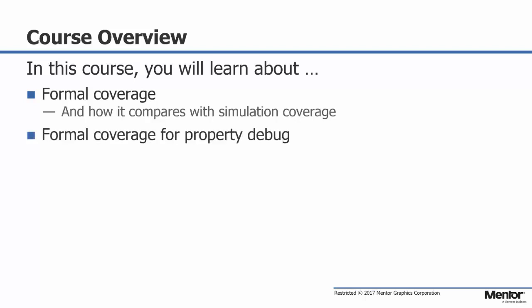Next we'll look at how formal coverage information can help you debug vacuous and uncoverable properties. These buggy properties are technically proofs and typically have little in the way of debug information that can be provided. With formal coverage there is more information available to you in helping debug the more complex cases.